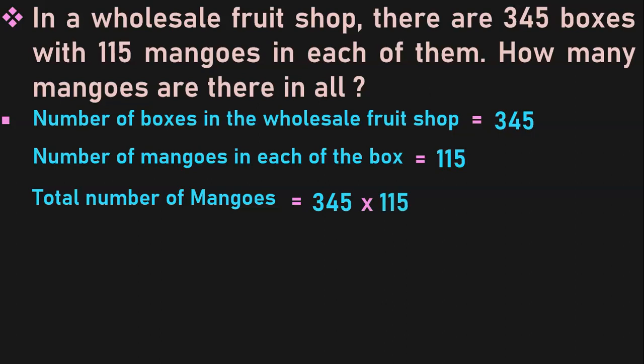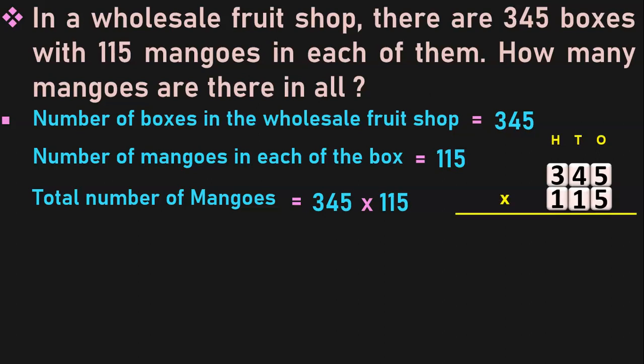This is a 3-digit by 3-digit multiplication. To do many sums in this concept, you may visit my video in which I have covered several examples. Link to that video of 3-digit by 3-digit multiplication is given below in the description box. Now write down the 3-digit number 345 with its place values and write 115 just below it vertically. Begin multiplication from the 1's place.